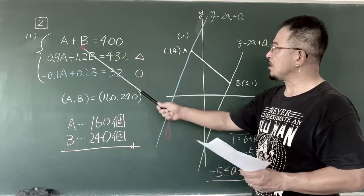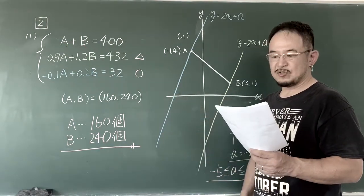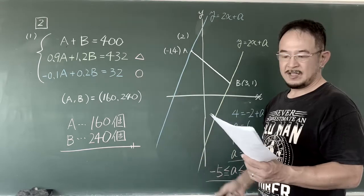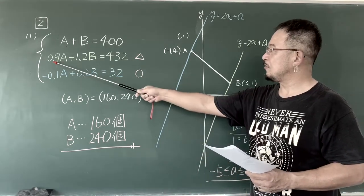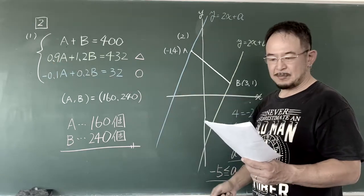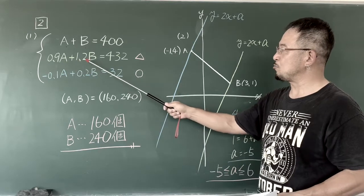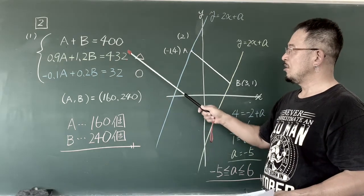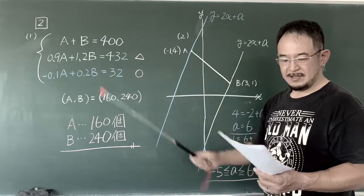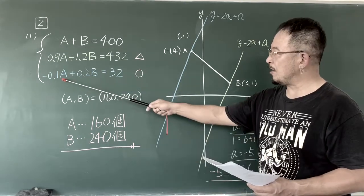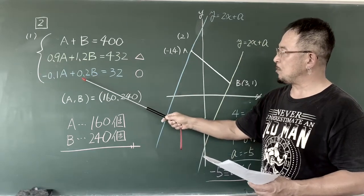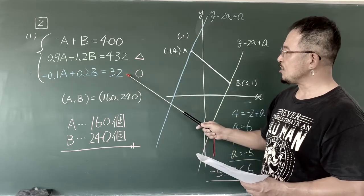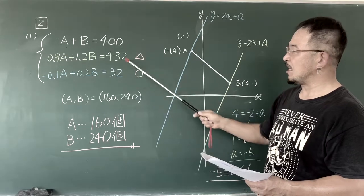7番目。AとB合わせて400個、これですね。もう一つの式が2つ書いてありますが、上がおすすめじゃない方、下がおすすめです。Aは10%少ない、90%になったという意味ですね。Bは20%多く、120%になったと。Aは10%減ったということで、Bが20%増えた。その結果、差し引きして32増えた。この式とこの式で計算すると、かなり計算が楽になります。